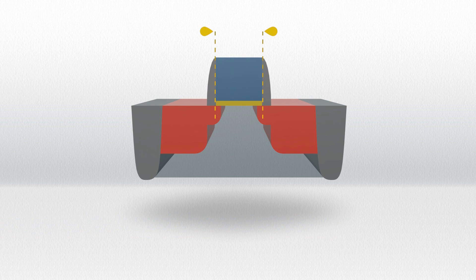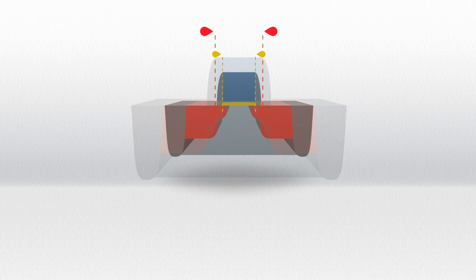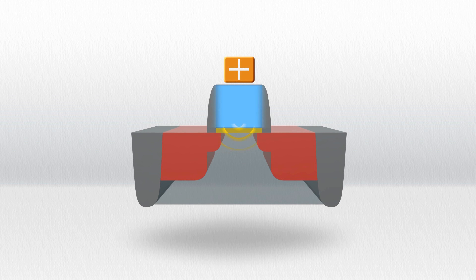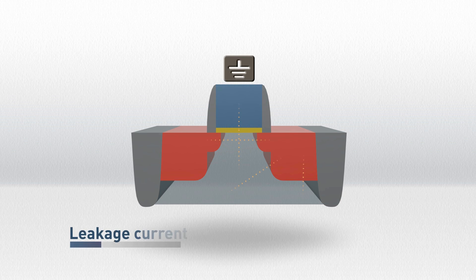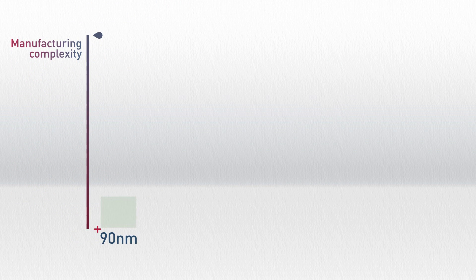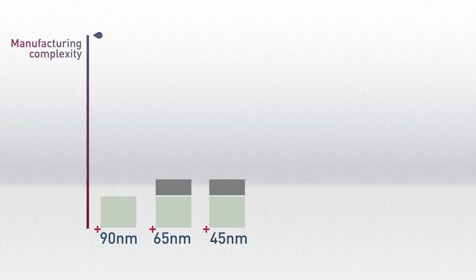As the transistor shrinks, the length of the gate is reduced. The control the gate exercises over the channel region is also reduced, lowering the transistor performance. Some unwanted leakage current flows even when the transistor is switched off. This leakage current has been increasing with every new generation of transistor and represents a growing proportion of power consumption. In order to minimize this leakage while continuing to deliver high performance, bulk silicon transistors have become ever more complex, adding additional levels of manufacturing complexity at an ever-increasing rate.